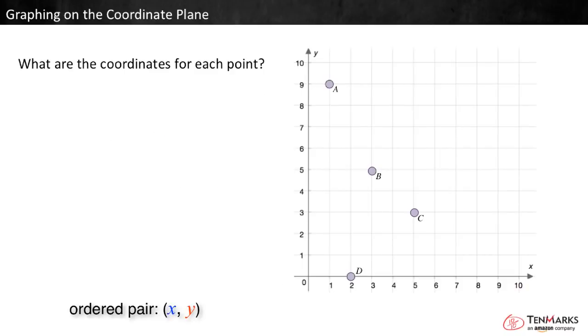Here is a larger grid with more points. What are the coordinates for each point? We need to write ordered pairs. Remember to find the x coordinate first. Point A is one space to the right of the origin, and nine spaces up. Its ordered pair is (1, 9).